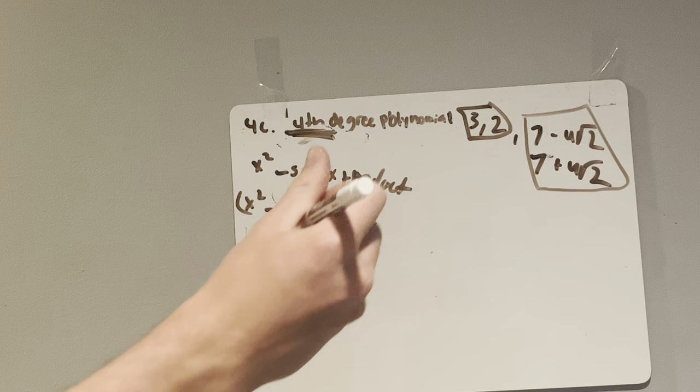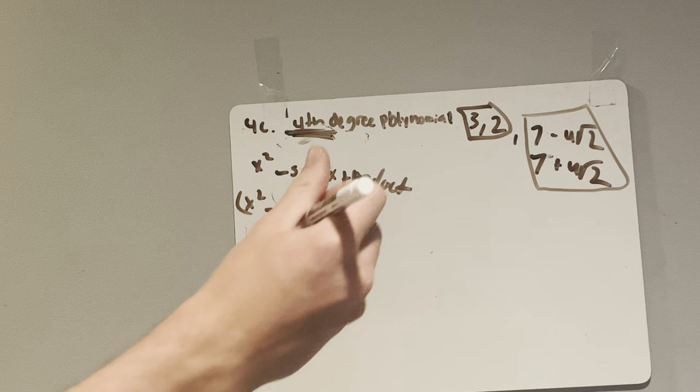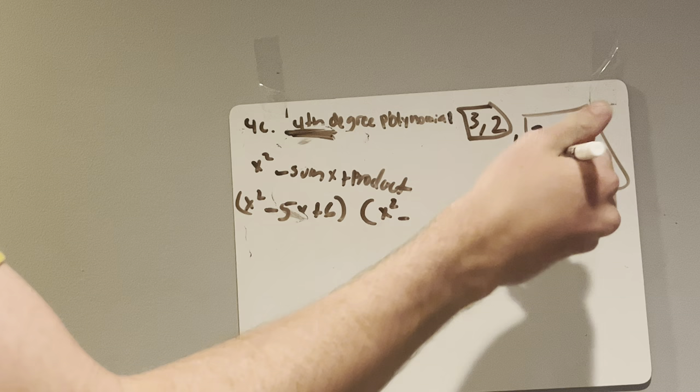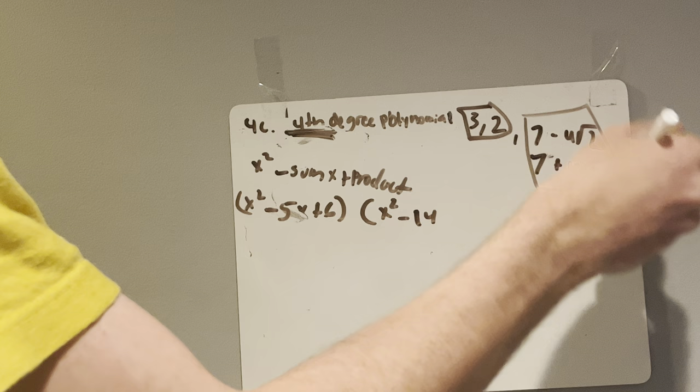Next, it gets a little bit trickier. We still start out with x squared minus, now the sum of these two. I'll start with the whole number, 7 and 7 is 14. And as you can see, the radicals cancel out. We have a negative and a positive of the same number, so it ends up being just 14x.